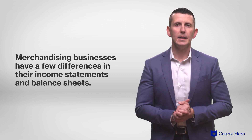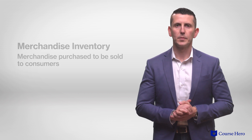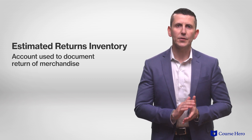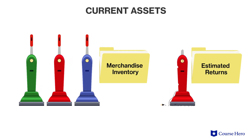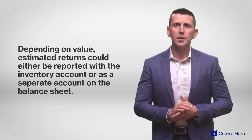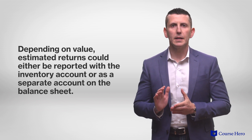The balance sheet of a merchandising business expands its assets section to include merchandise inventory and sometimes estimated returns inventory. Merchandise inventory is the merchandise purchased to be sold to consumers. Estimated returns inventory is the account used to document the return of merchandise for either dissatisfaction or damage. Both are considered current assets. Depending on how material the estimated returns are, they could be reported together with the inventory account with a simple note to the financial statements, or reflected as a separate account on the balance sheet.